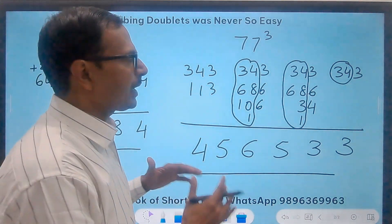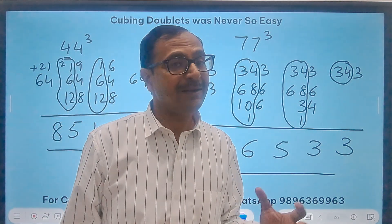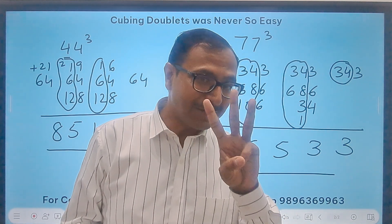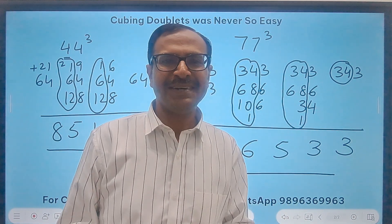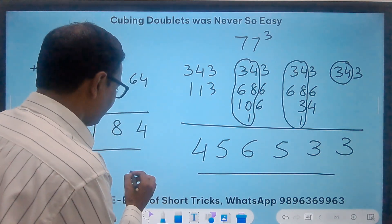Try 88 cube. Try 99 cube. And if possible, try the triplets. 1, 1, 1 cube. Just take like 1, 1, 1 cube.